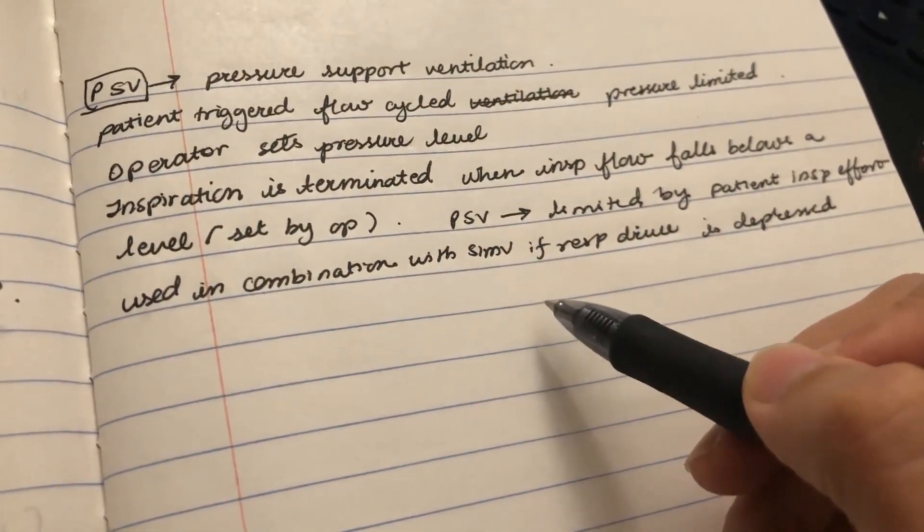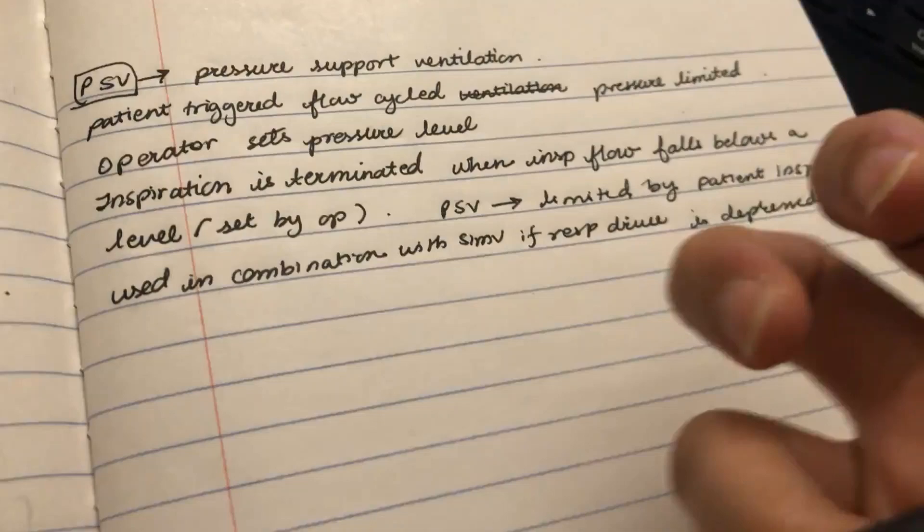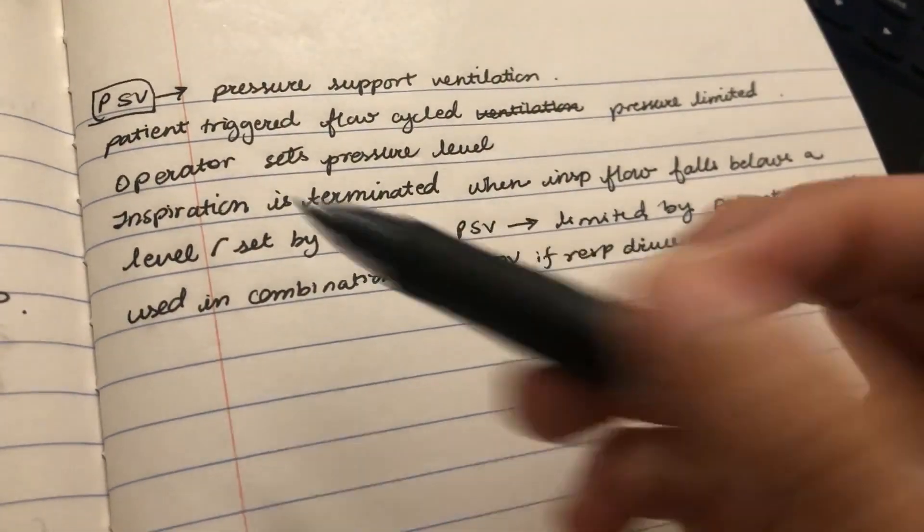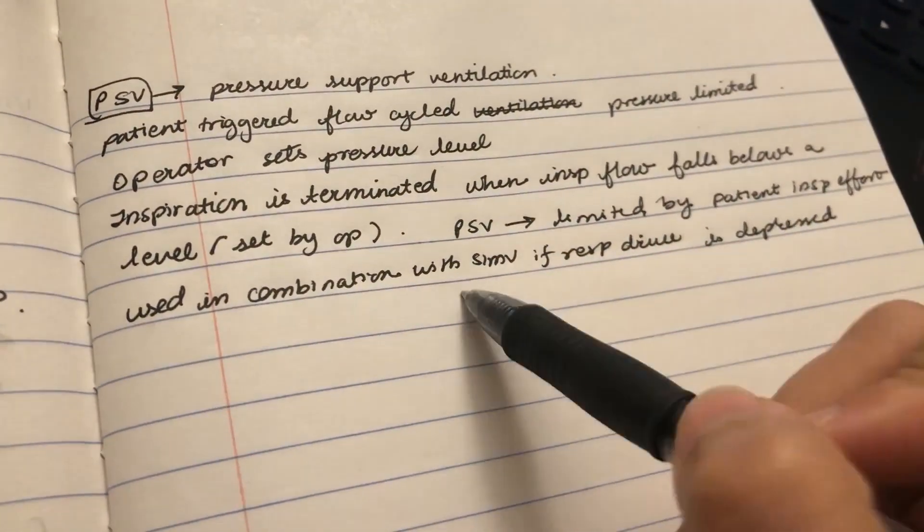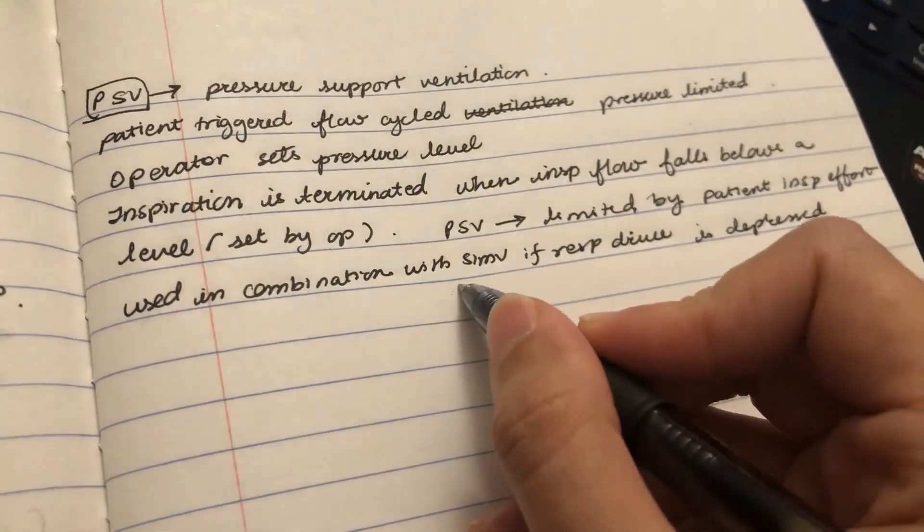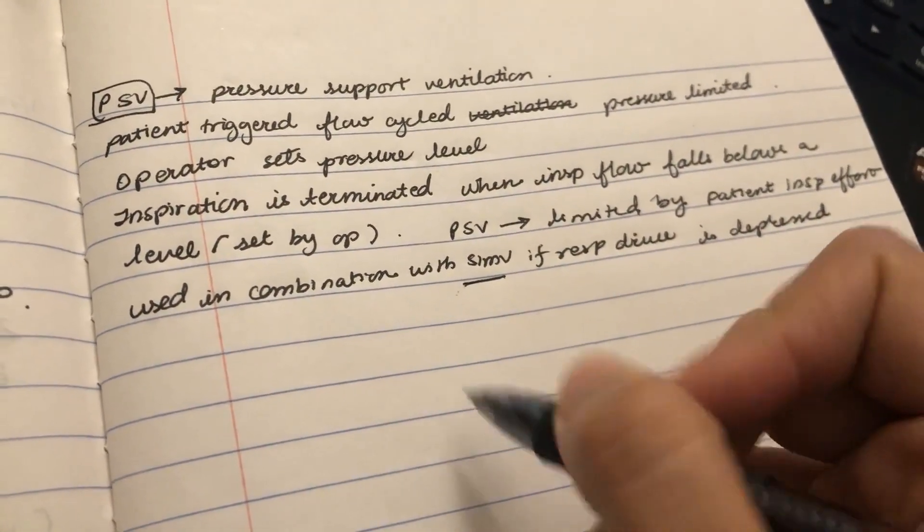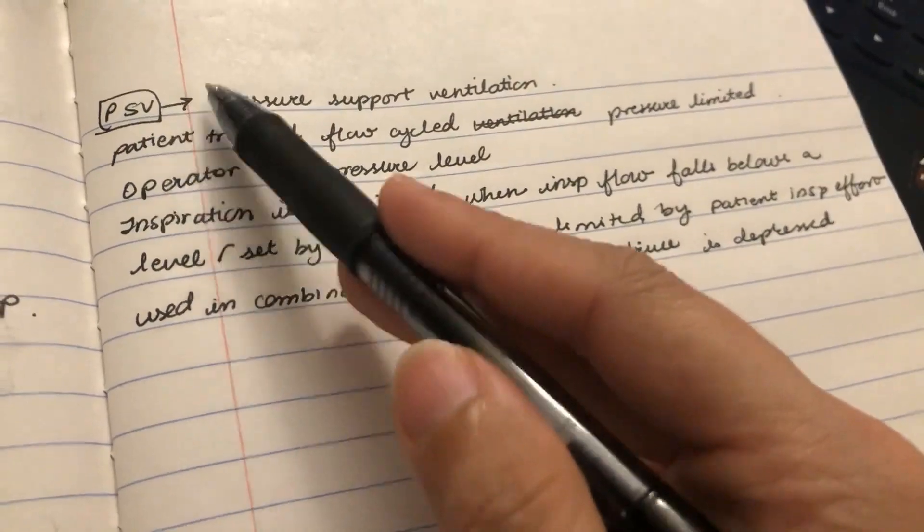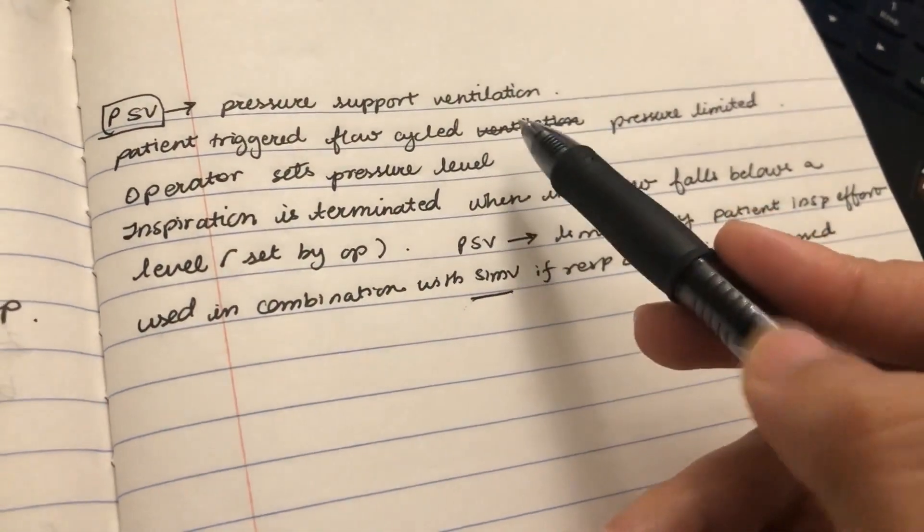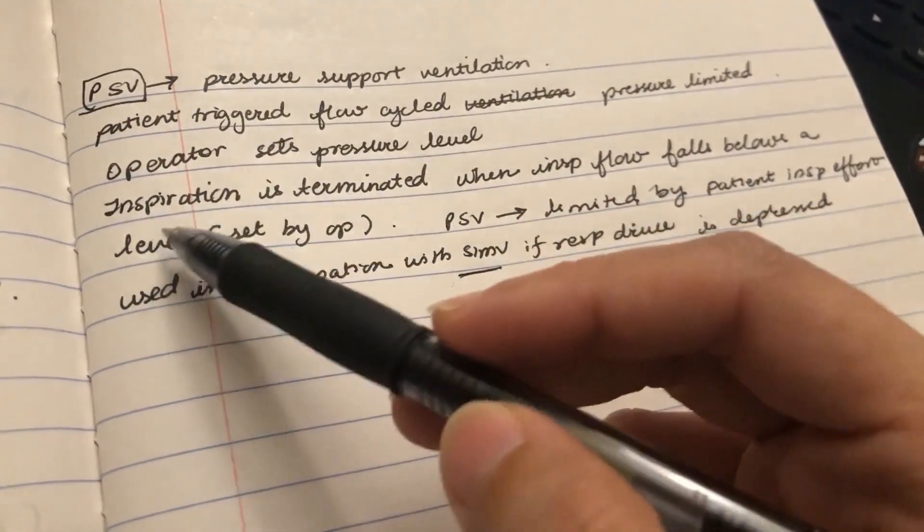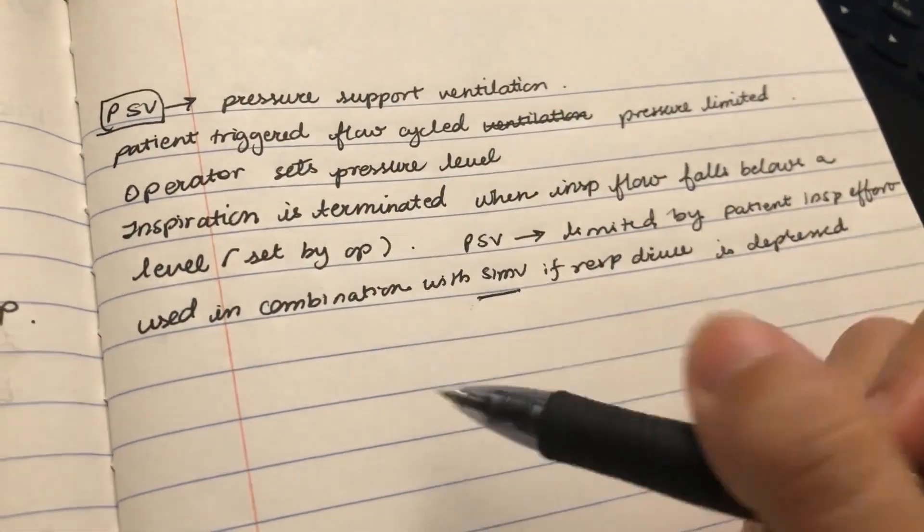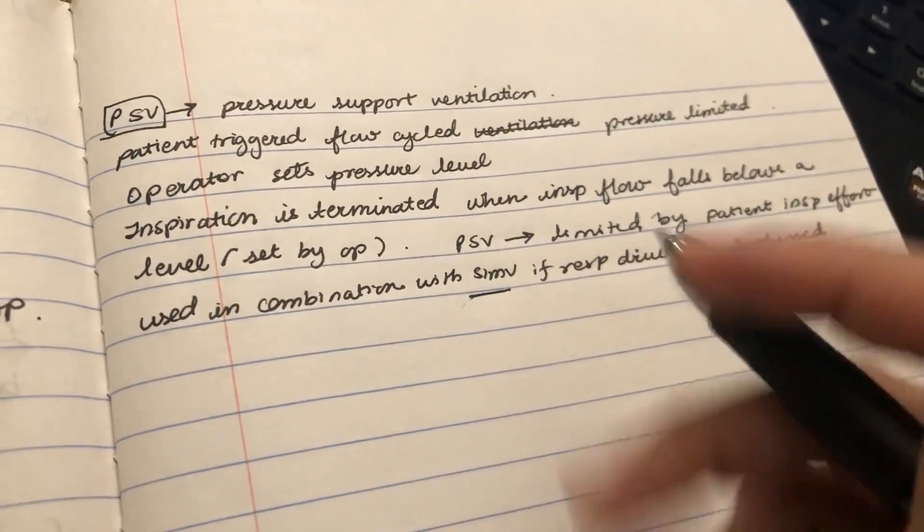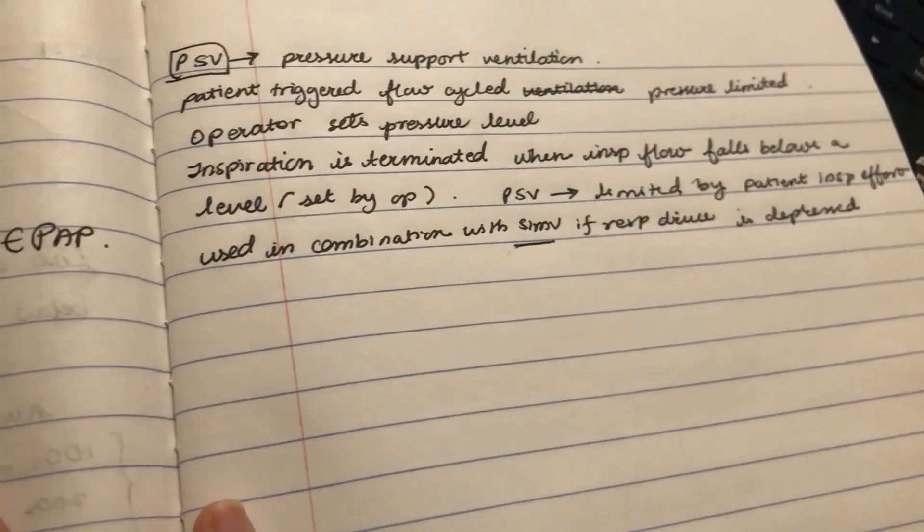The inspiratory flow you set and pressure support is limited by patient's effort. PSV and SIMV are used because if the patient is dependent on respiratory drive, so if the patient doesn't breathe, they don't get breaths. These are the basic modes of ventilation.